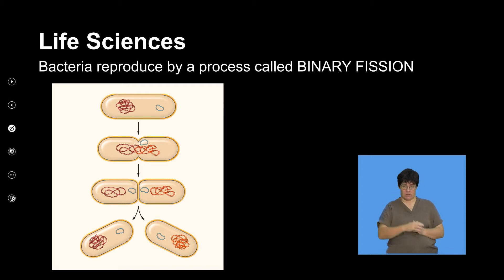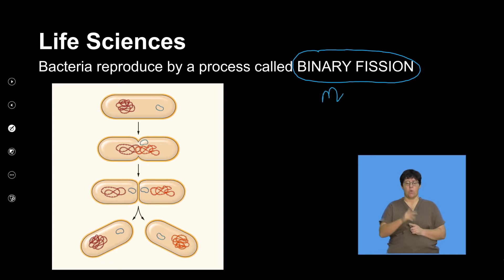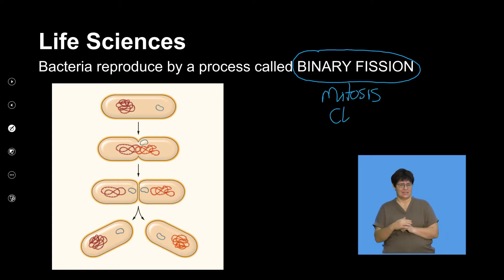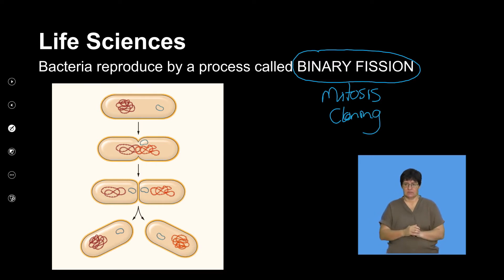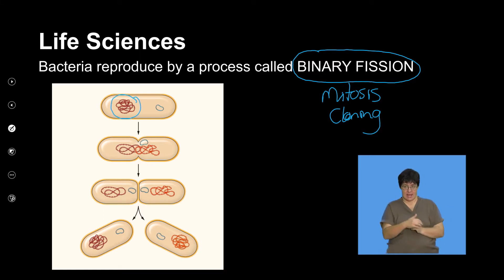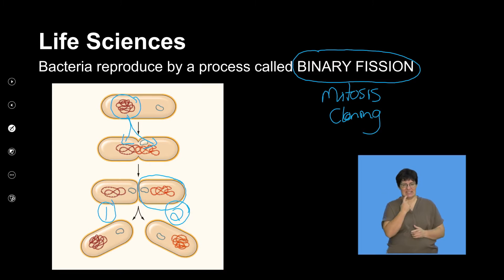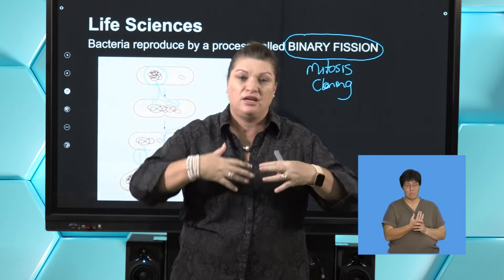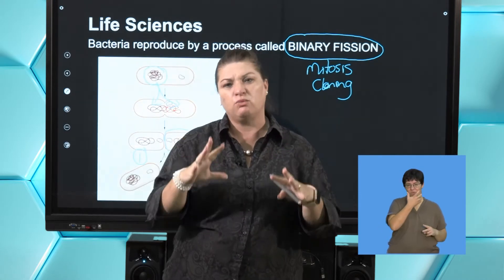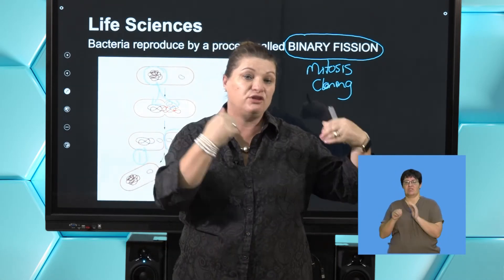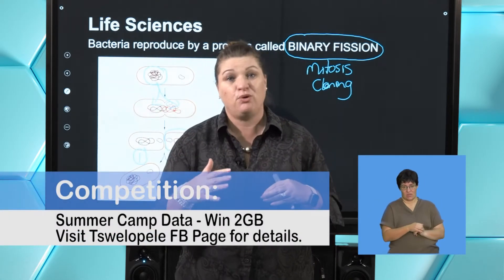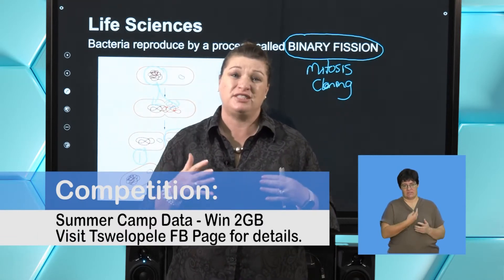We don't call it mitosis, and we don't call it cloning, although that is actually what it is. Simply, a bacterium makes a copy of its DNA, puts one copy on each side, the cytoplasm divides, and we have two identical bacterium cells. That is why, once bacteria start to grow, they grow very, very quickly — especially in a warm environment. That's why we put food in the fridge: to slow down or stop the process of dividing, so our food doesn't go off.